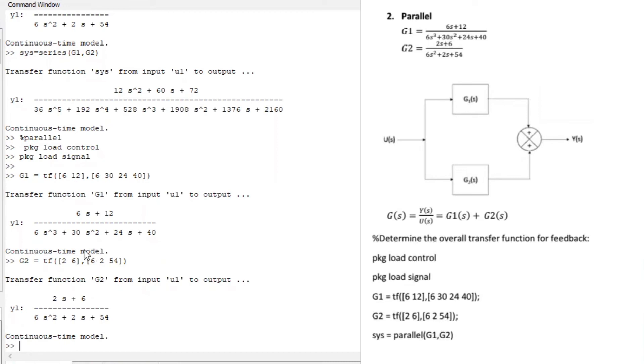So all you have to do is say sys equals parallel. Make sure the spelling is correct. Parallel, G1, G2. Make sure the spelling is perfect. Everything looks good from my side.